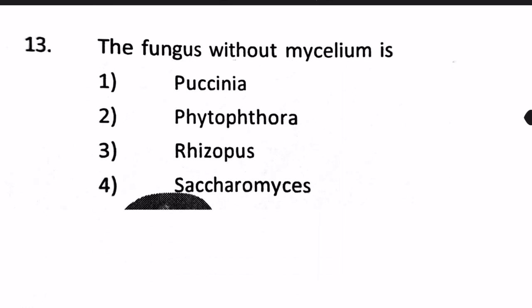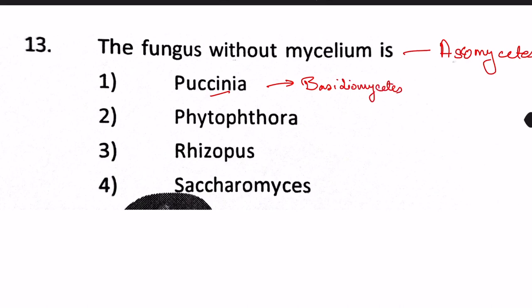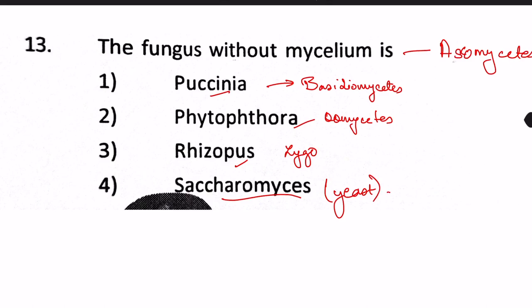Next question: Which fungus is without mycelium? Options are Puccinia, Phytophthora, Rhizopus, and Saccharomyces. Puccinia belongs to Basidiomycetes, Phytophthora belongs to Oomycetes, Rhizopus belongs to Zygomycetes. Saccharomyces cerevisiae is a yeast belonging to Ascomycetes, and yeast does not have mycelium — so the answer is option four, Saccharomyces.